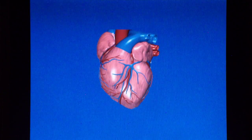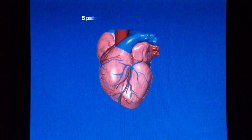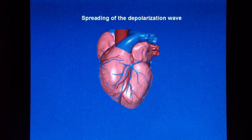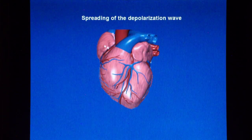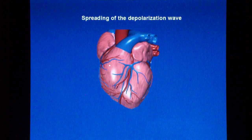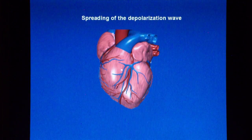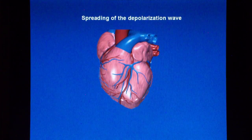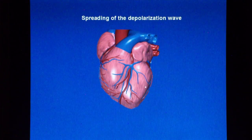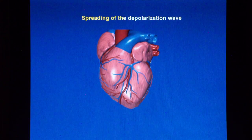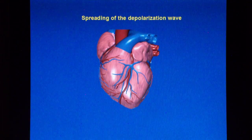An electrical impulse causes the heart to contract. Such electrical impulse spreads in the surrounding tissues and a small amount reaches the surface of the body. The ECG is a recording of that electrical activity.